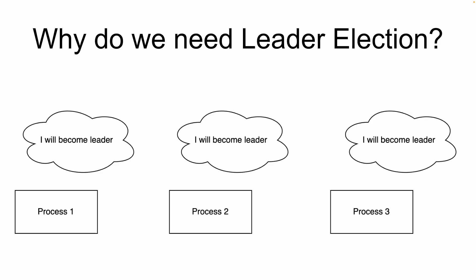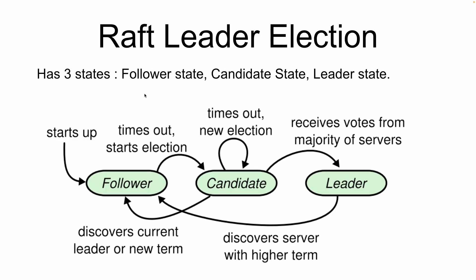One of the algorithms used for leader election is Raft leader election. This algorithm defines three states in which a process or server can exist: follower state, candidate state, and leader state. The follower state is when a process blindly follows the leader's instructions and applies them to its own state, staying in sync with the leader. The candidate state is when a process wants to become the leader — it stays in candidate state and lets other followers vote on whether it should become the leader. When the process starts up, it is initially a follower.